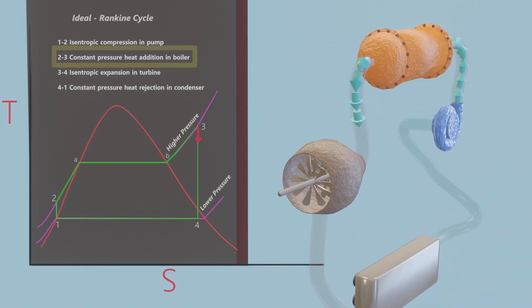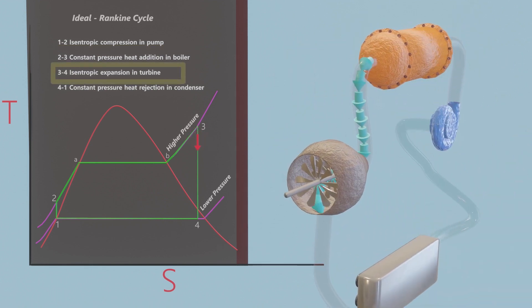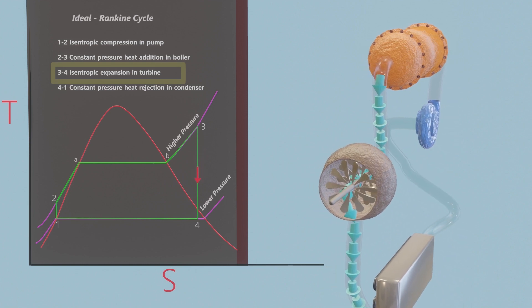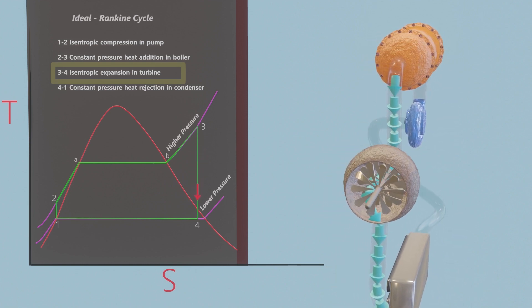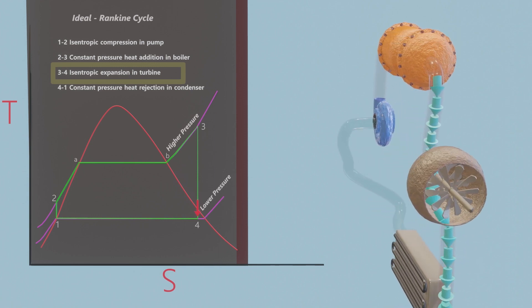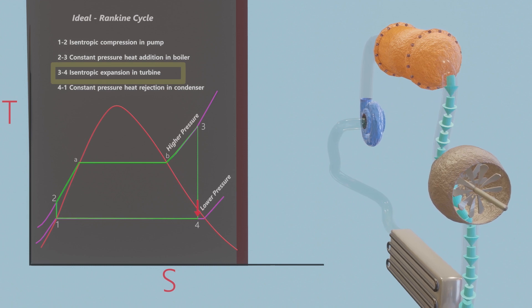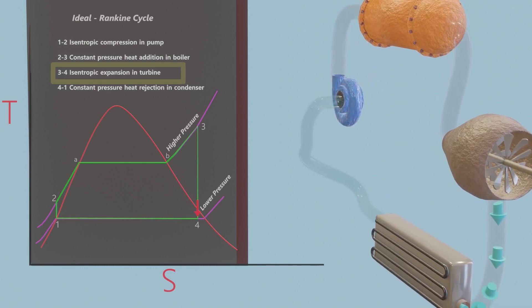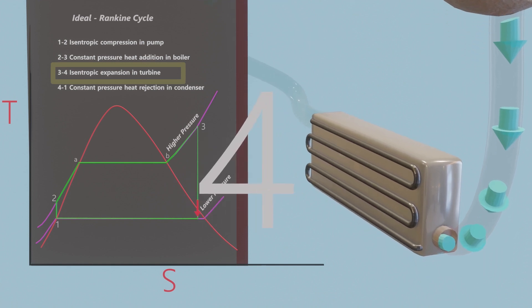The superheated vapor at state 3 enters the turbine, where it expands isentropically and produces work by rotating the shaft connected to an electric generator. The pressure and the temperature of steam drop during this process to the values at state 4, where steam enters the condenser.